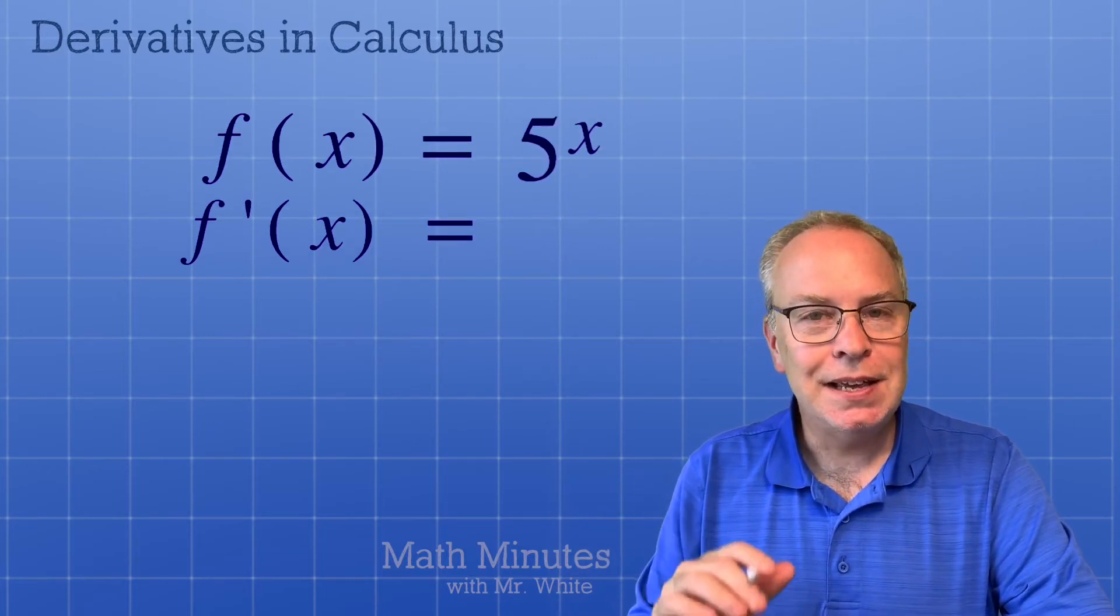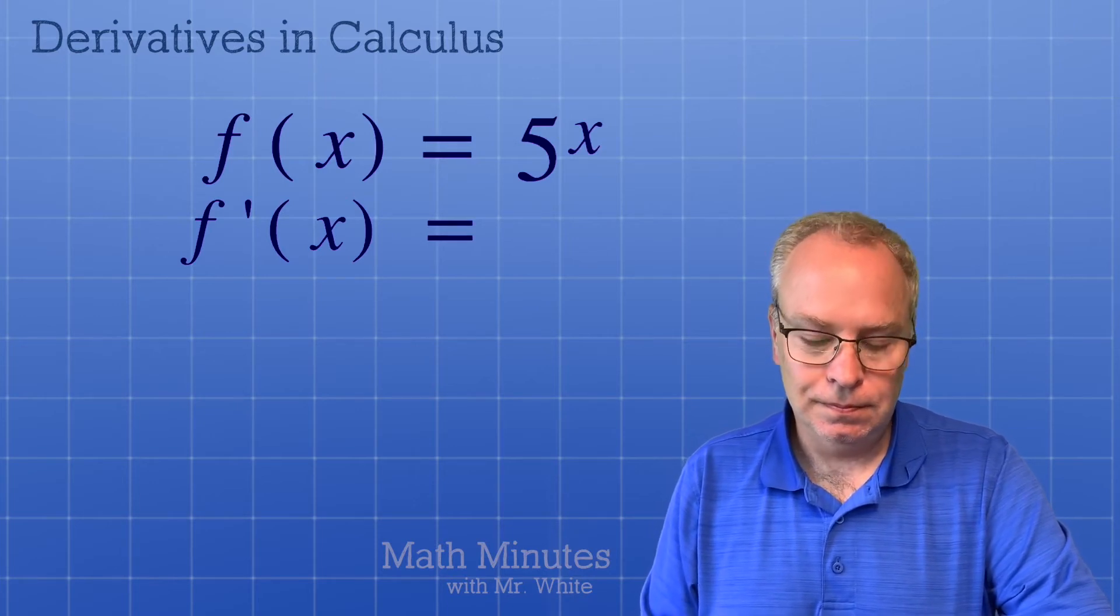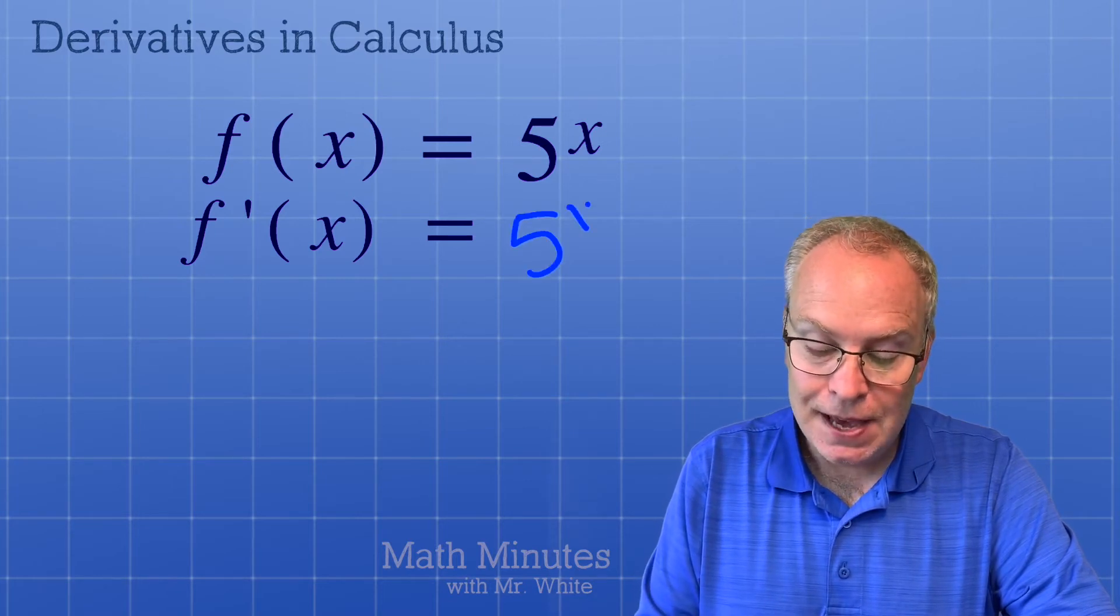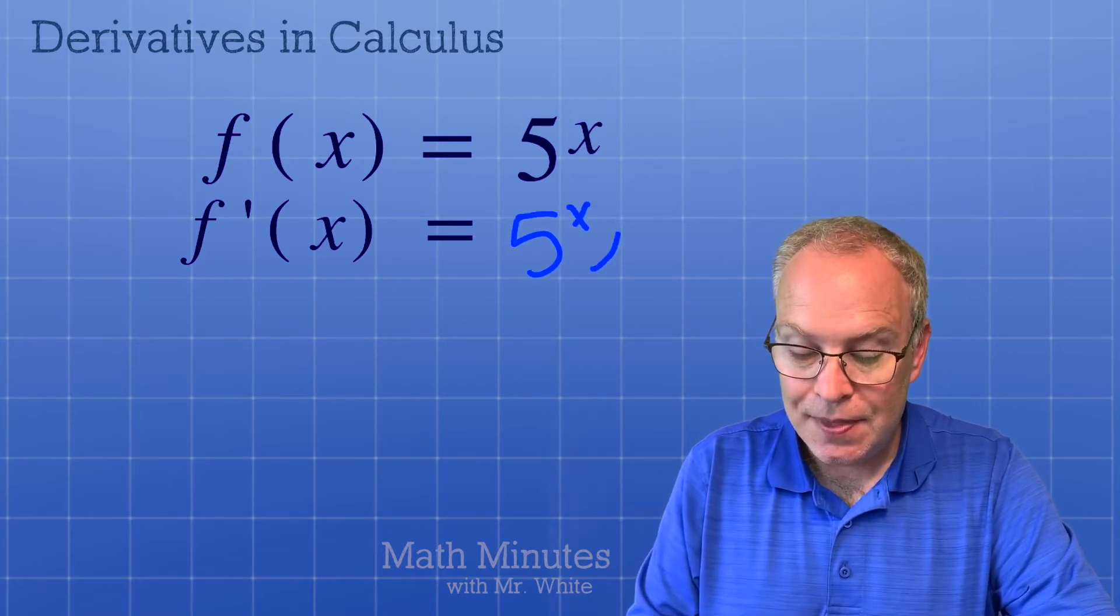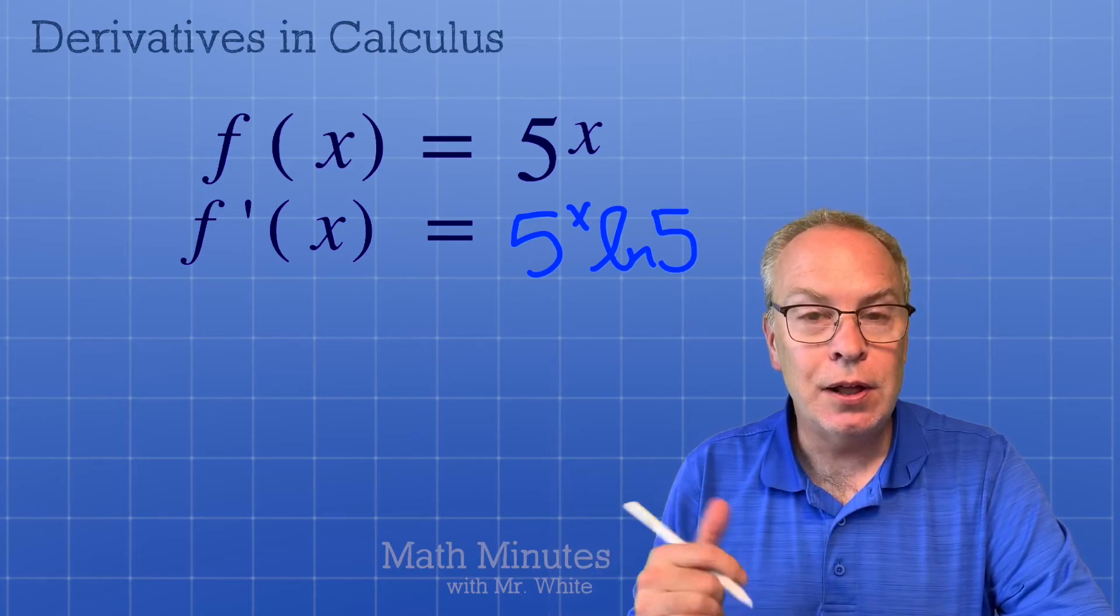Now what if the base is not e? What's the derivative of 5 to the x? Well, you still write 5 to the x, but you have to remember to tack on that natural log of the base, natural log, so ln 5.